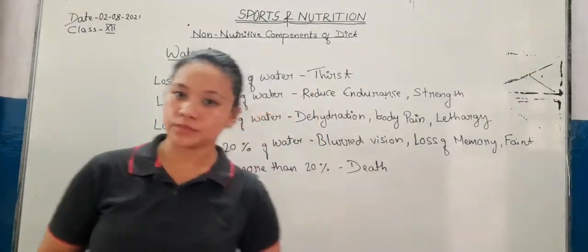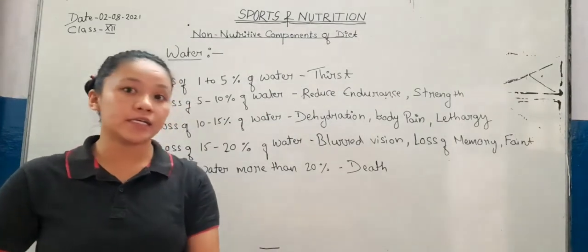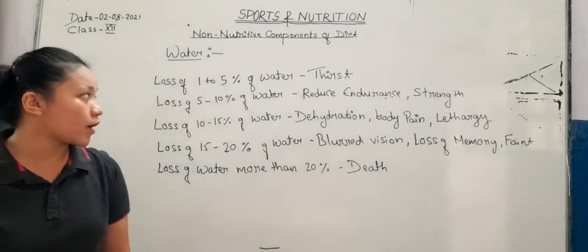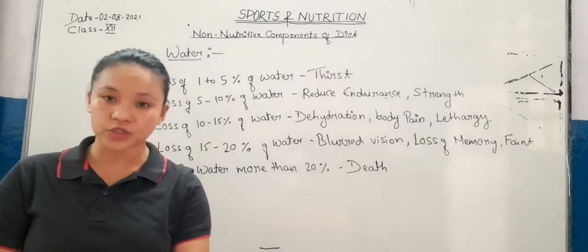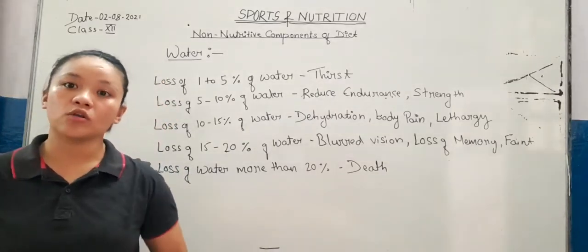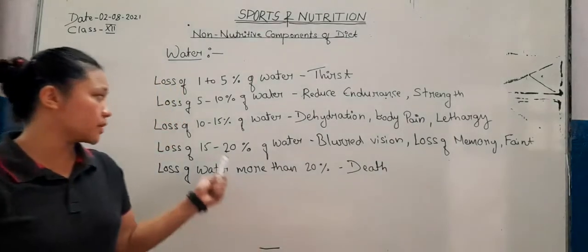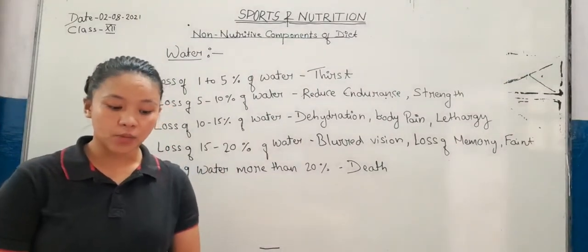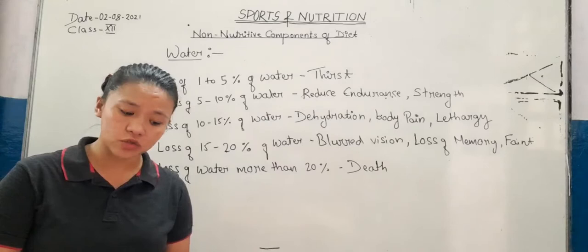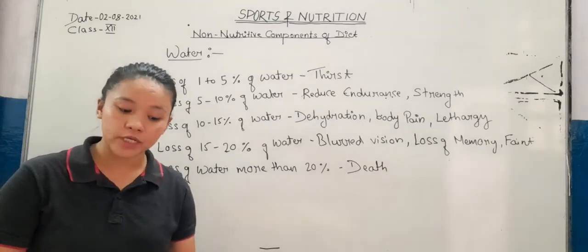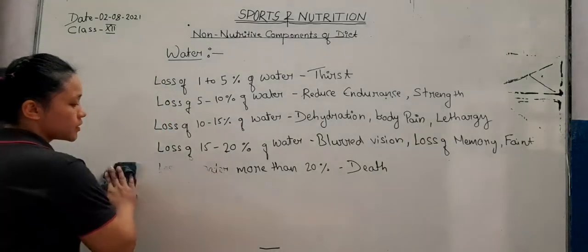To recap: our body consists of around 70 percent water. A loss of 1 to 5 percent causes thirst and stress; 5 to 10 percent leads to loss of strength and endurance; 10 to 15 percent leads to dehydration and body pain; 15 to 20 percent causes blurred vision and loss of memory; and more than 20 percent leads to death.